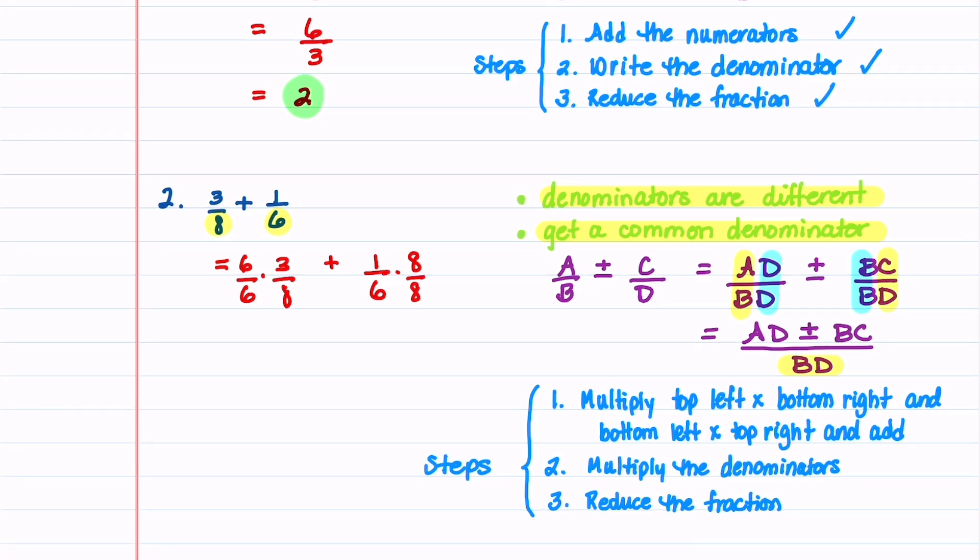When we do this, we're essentially multiplying the top left number by the bottom right number. This gives us 3 times 6, which is 18, and then we're multiplying the bottom left number by the top right number, and adding it to what we just got. Then we multiply the denominators, and we get 48.